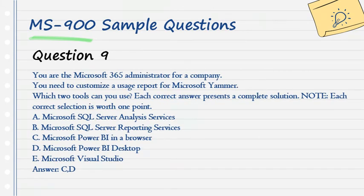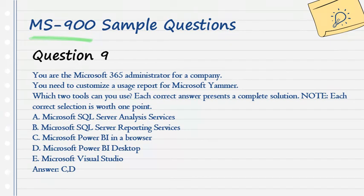Question 9. You are the Microsoft 365 administrator for a company. You need to customize a usage report for Microsoft Yammer. Which two tools can you use? Each correct answer presents a complete solution. Note, each correct selection is worth one point. A. Microsoft SQL Server Analysis Services. B. Microsoft SQL Server Reporting Services. C. Microsoft Power BI in a browser. D. Microsoft Power BI Desktop. E. Microsoft Visual Studio. Answer: C, D.